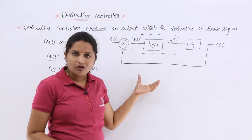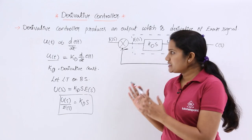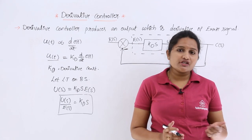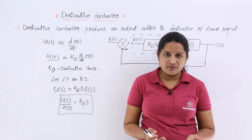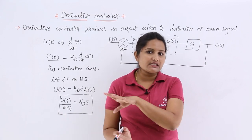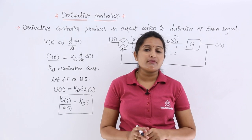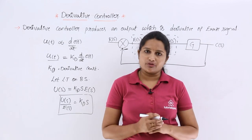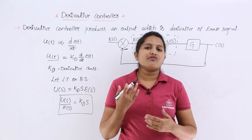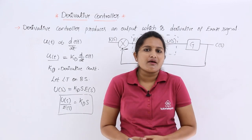This will improve the functionality of the control system. In terms of when to use this controller: the derivative controller is used to improve the stability of the system. The proportional controller, which we observed in the last video, is used to change the transient response. If you want to change the transient response, choose the proportional controller. If you want to increase the stability of the control system, the derivative controller is suggested. By increasing the number of zeros, we can increase the stability of the control system, and the derivative controller does exactly that — it increases the number of zeros.